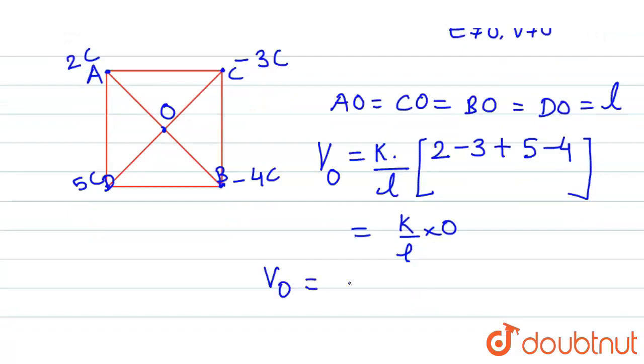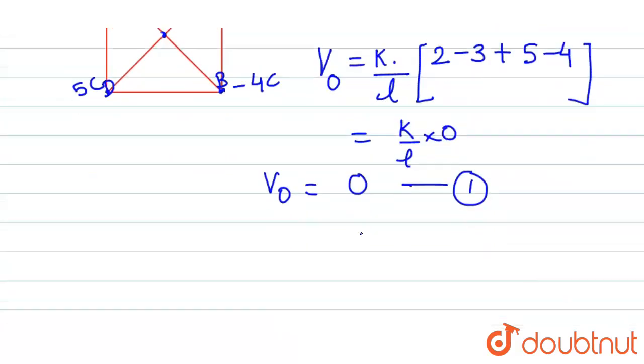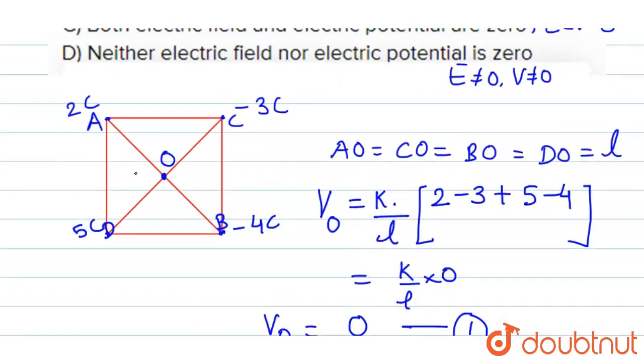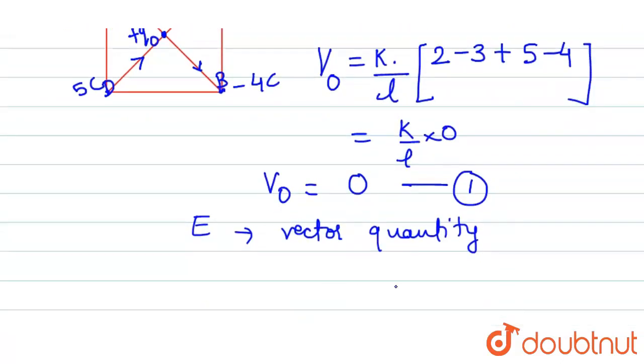But now, as consideration to the electric field, electric field is a vector quantity, hence its resultant will not be equal to 0. Suppose we are taking here a test positive charge like plus Q0, then the electric field for Q0 for minus 3 coulomb will be directed inward. Then, for this inward, for this outward, for this outward, and for this also outward. Now, all the charges are of different magnitudes. Therefore, when we will be finding the resultant of electric field, it will not be equal to 0.